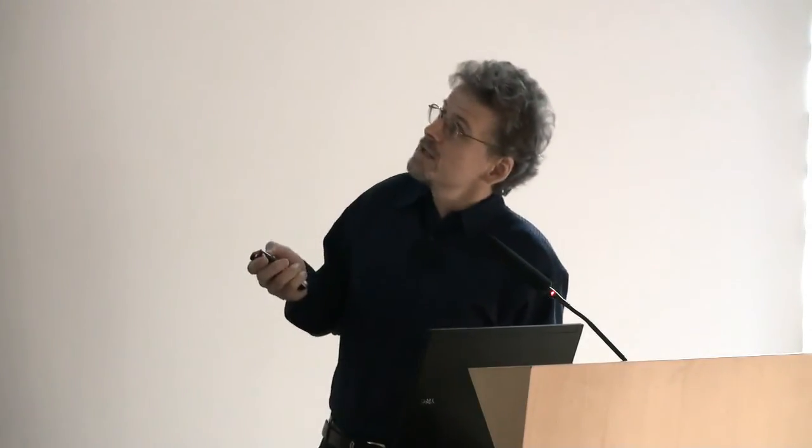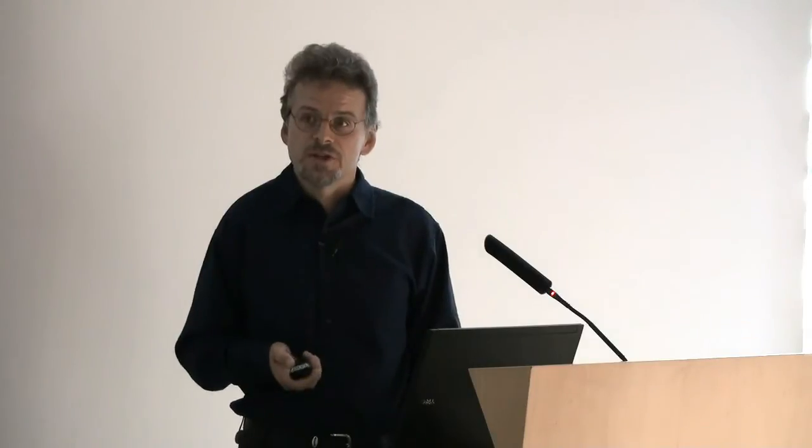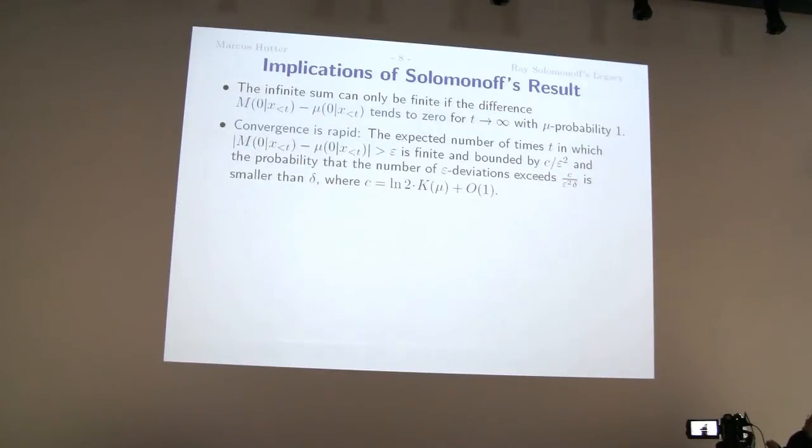And, I mean, if this convergence were just asymptotic, when asymptotically we're all dead, that would be a nice theoretical result. But actually, you can show, or this result implies rapid convergence in the following sense. So let's look at the cases where m deviates from mu by at least epsilon. You would like to have a smaller epsilon, but it could be larger than epsilon. So how often can that happen? So if this compound... So the bound was ln 2 times K of mu, actually it should be 1 half. So it can happen at most c divided by epsilon squared times. Because, I mean, you sum all these epsilons up and you exceed the bound. So the number of epsilon deviations can be at most this constant. And the description length of the environment is typically reasonable. So you get a reasonable constant.